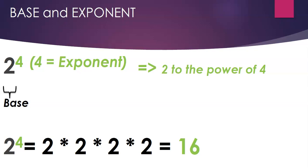First, let us look at what is a base, what is an exponent, and what are powers. We have an example of 2 raised to 4. The way we mention it is '2 to the power of 4,' where 4 is the exponent and 2 is the base. 2 raised to 4 is nothing but 2 multiplied by 2 multiplied by 2 multiplied by 2.